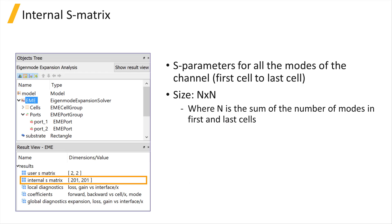However, if you are interested in the information about the S-Parameters for all of the modes of the first and last cell, you can use the internal S-Matrix result. The resulting size of the internal S-Matrix will be n by n, where n is the sum of all of the modes in the first and last cell.